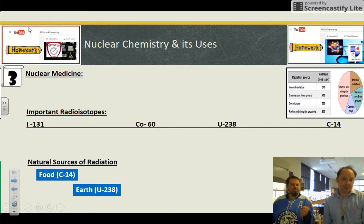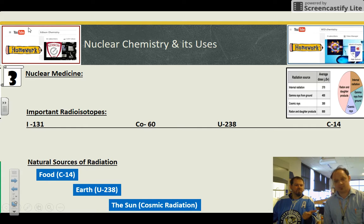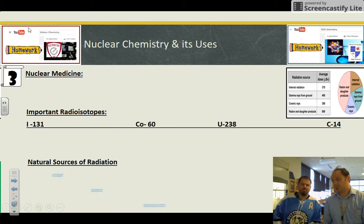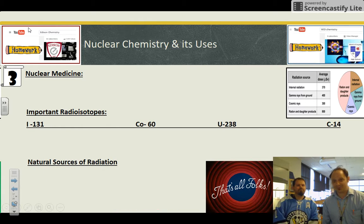Natural sources, food and carbon 14. Earth gives us uranium and the sun gives us our cosmic radiation. And we did that slide really fast because that's it. We're all done. See you in class.